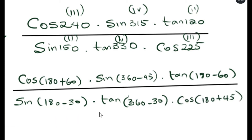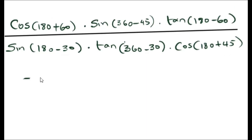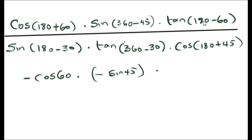Now we bring everything back to the first quadrant and assign signs depending on whether sine, cos, or tan is positive or negative in each quadrant. Since cos 240 is in the third quadrant, cos is negative there. Sine is negative in the fourth quadrant. And tan is negative in the second quadrant.